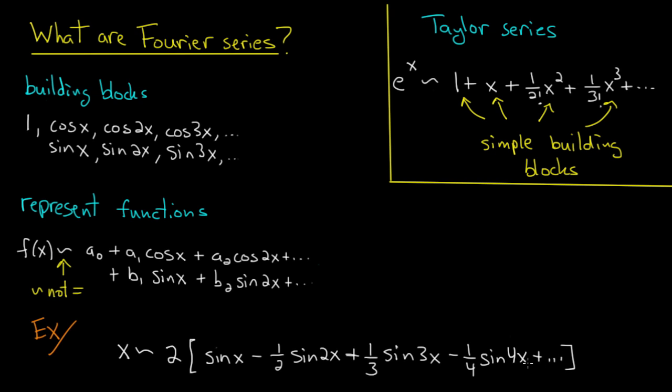Now there's no cosines that appear, and all that means is that all of the A coefficients in this representation are 0. Okay.